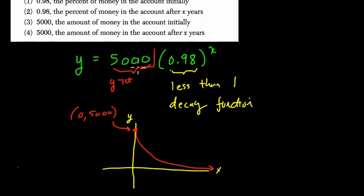In general, when you see equations in this form, the number in front right here is your y-intercept.